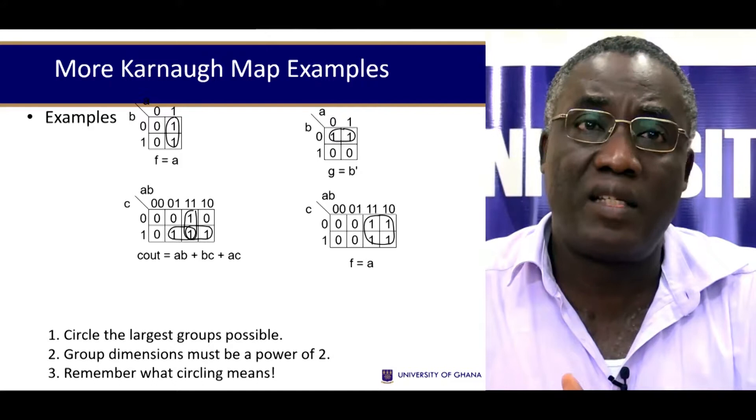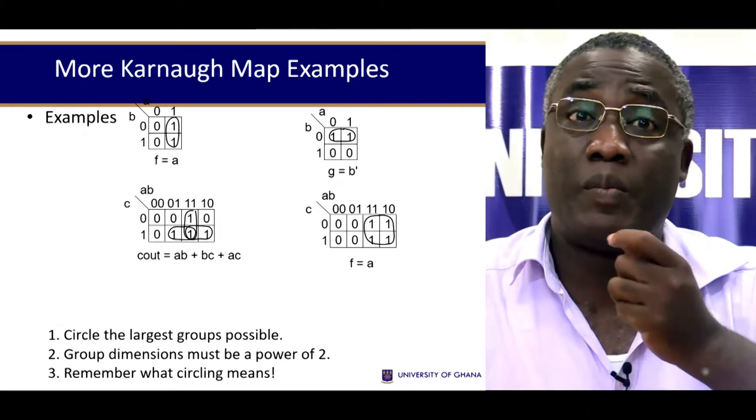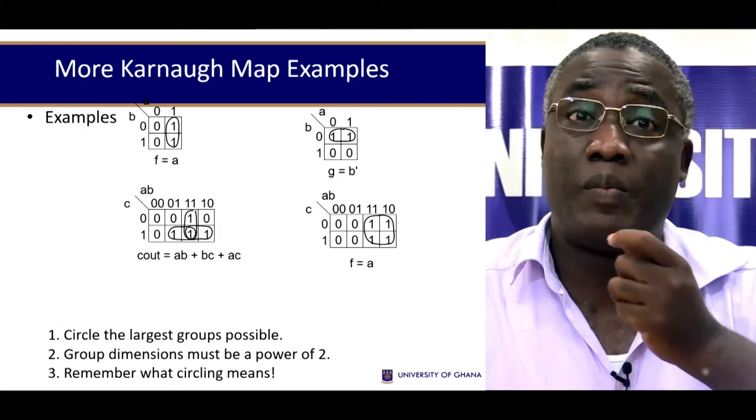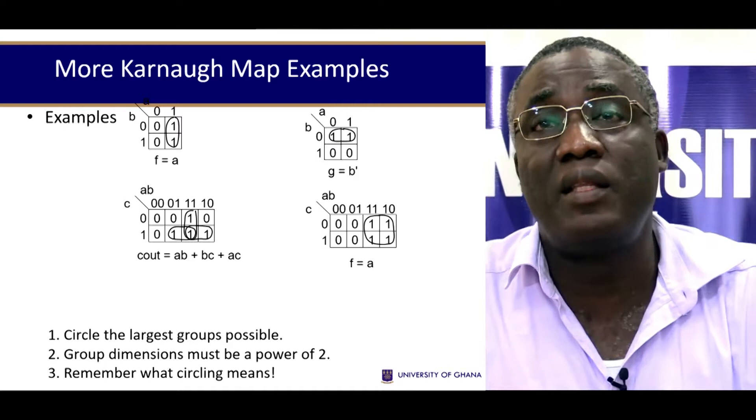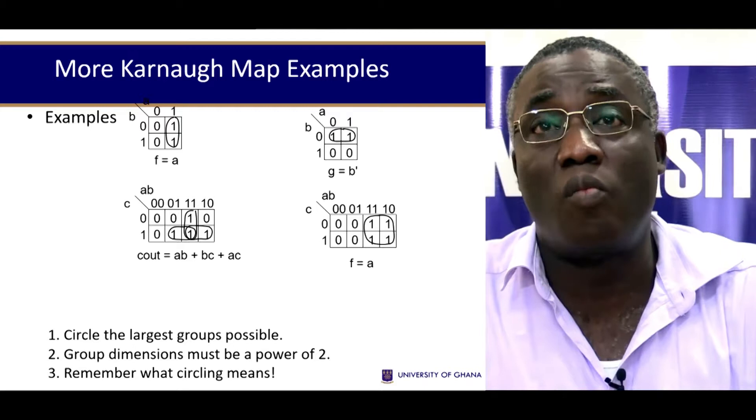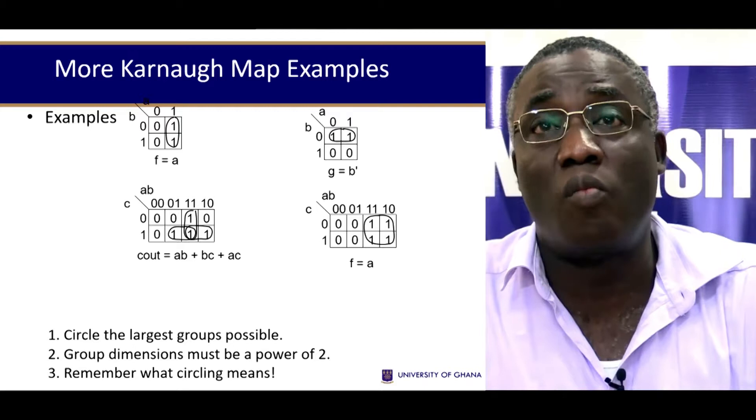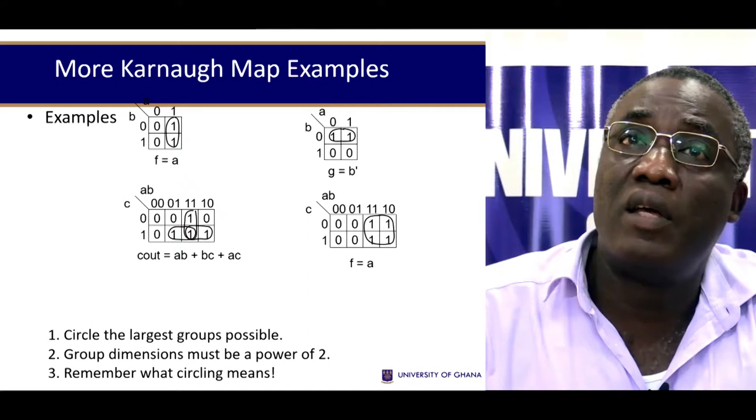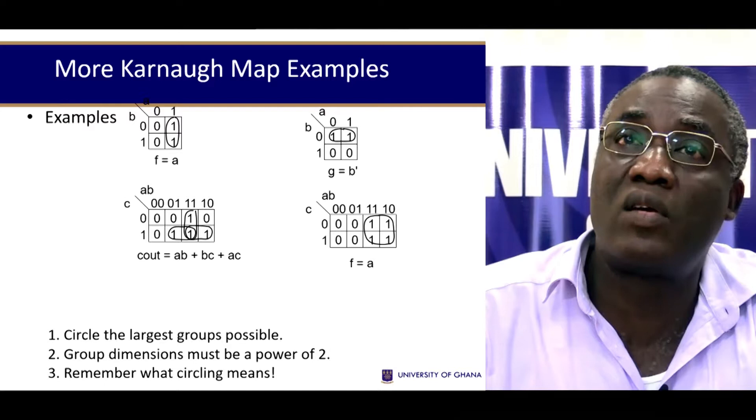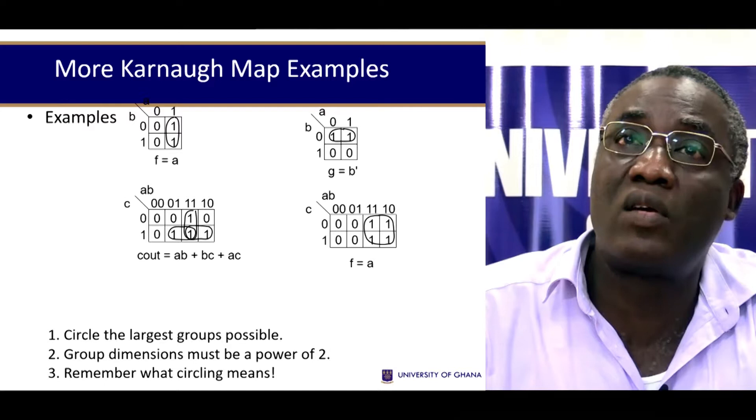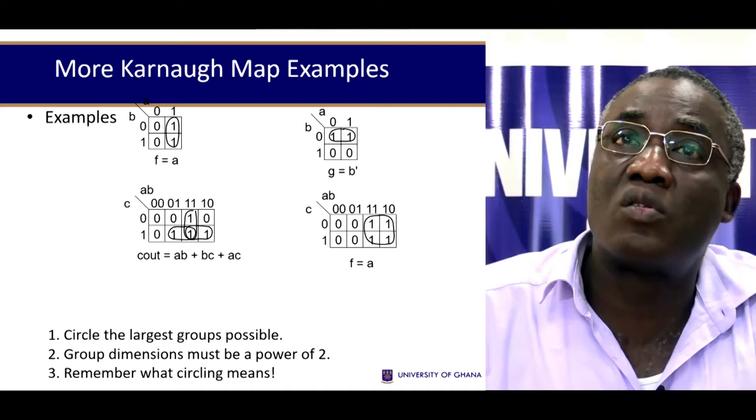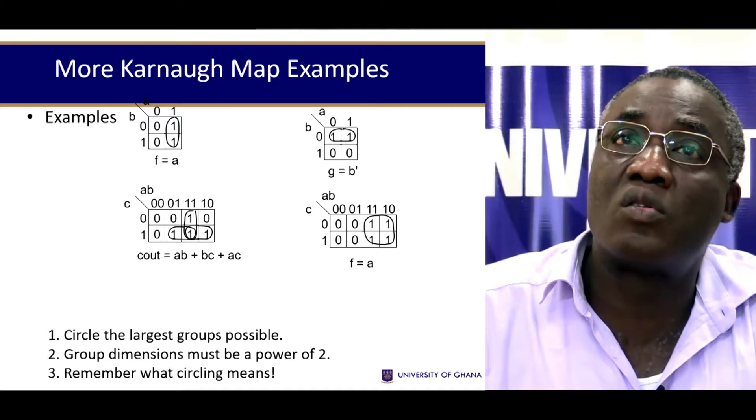To remind you, circle the largest groups, the largest groups possible. Group dimensions must be power of two. And don't forget what circling means. When you are circling, you are actually trying to eliminate some variables, those that are complementing each other. So if you take this example, if you circle this, B is changing from one to zero, so B will go out. And if you go down here as well, C is changing, so C will go out. So this whole expression, you will only be left with an A.